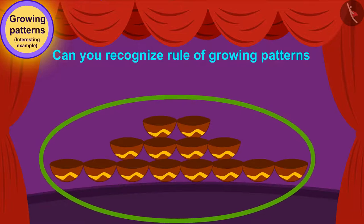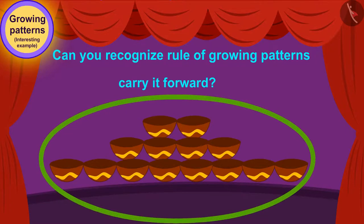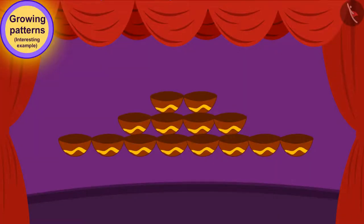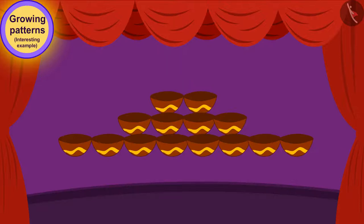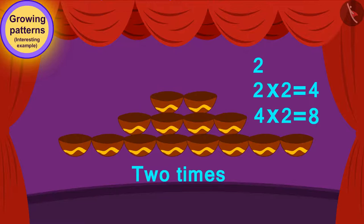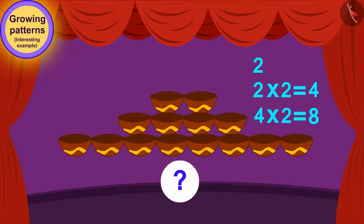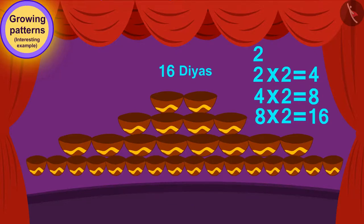Well done, children! Your answer is absolutely correct. Here, every line of diyas has two times the diyas from its earlier line. Thus, how many diyas will be in the next line of this growing pattern? 16 diyas!